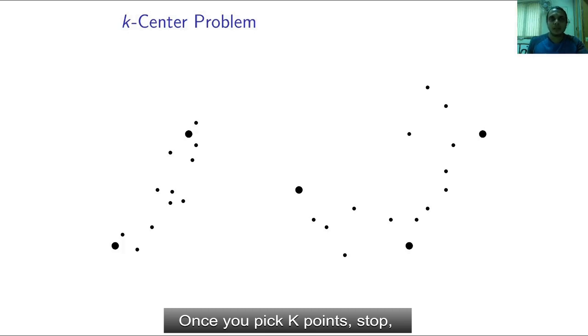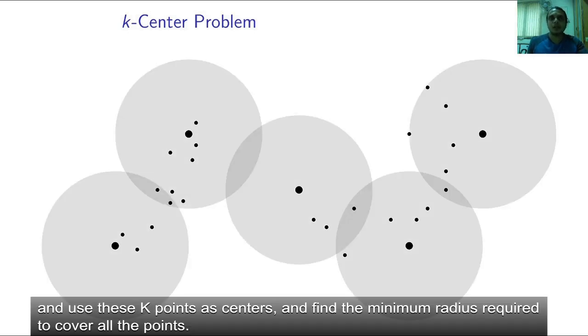Once you pick k points, stop and use these k points as centers and find the minimum radius required to cover all the points.